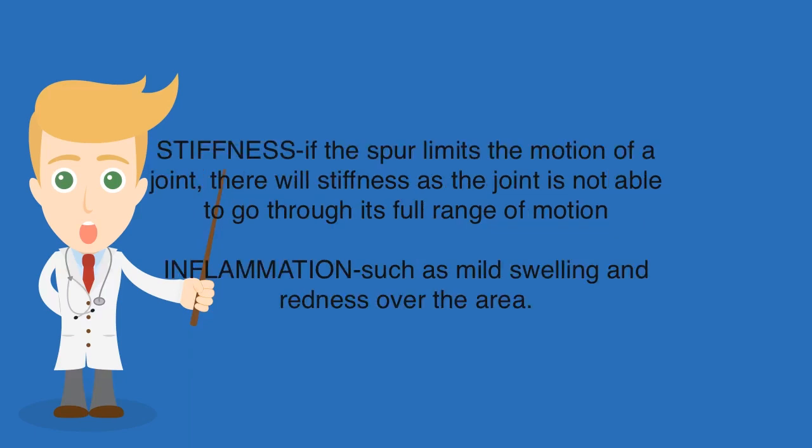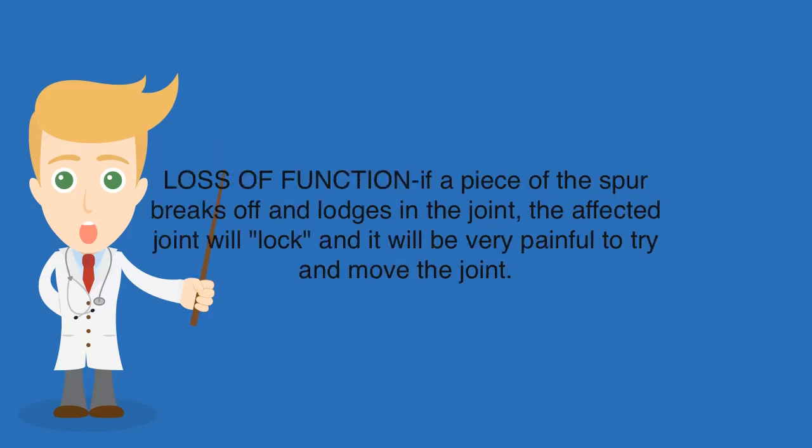Stiffness: if the spur limits the motion of a joint, there will be stiffness as the joint is not able to go through its full range of motion. Inflammation such as mild swelling and redness over the area. Loss of function: if a piece of the spur breaks off and lodges in the joint, the affected joint will lock and it will be very painful to try and move the joint.